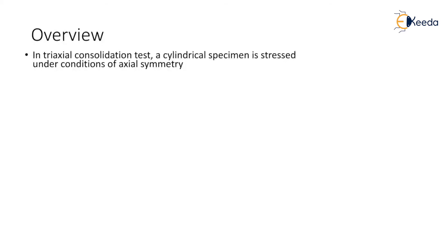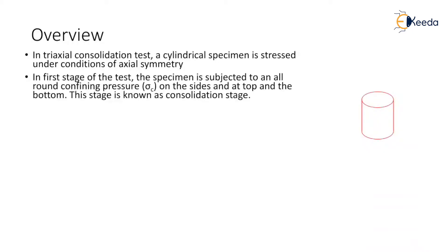In the triaxial consolidation test, a cylindrical specimen is stressed under conditions of axial symmetry. In the first stage, the specimen is subjected to an all-round confining pressure, denoted as sigma c, on the sides and the top and the bottom. This stage is known as the consolidation stage. There are two stages in the shear test: the first stage is consolidation and the second is shear stage.